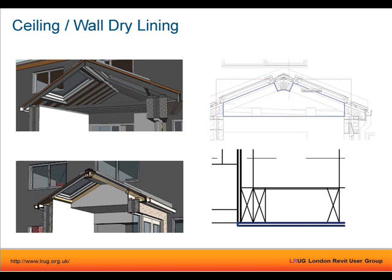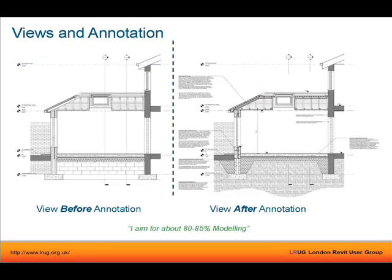With the modeling phase complete — roof and everything else in — I move to the annotation stage. I try to aim for about 80% modeling and 20% annotation, though it doesn't always work out that way. With 80% modeling you tend to have to do fewer graphical fixes, and every graphical fix you do might be wasted time if the design changes and you have to redo it.